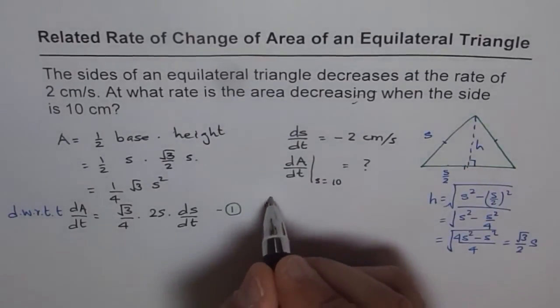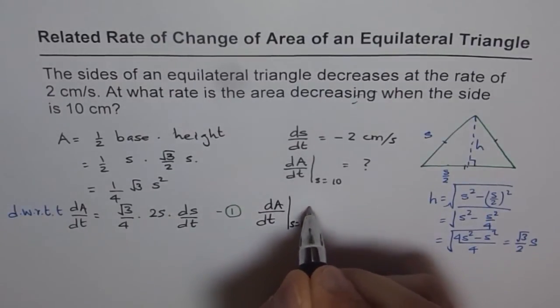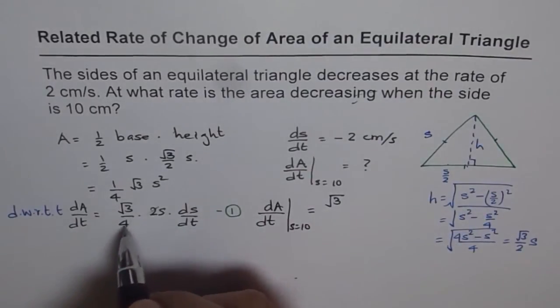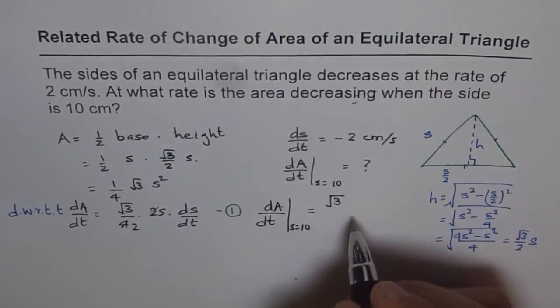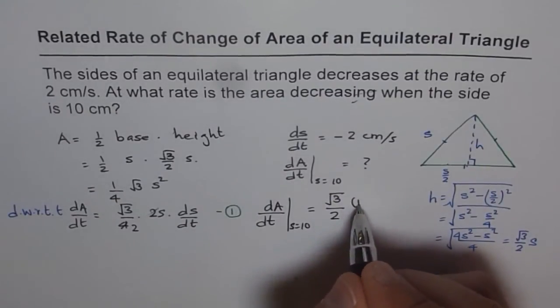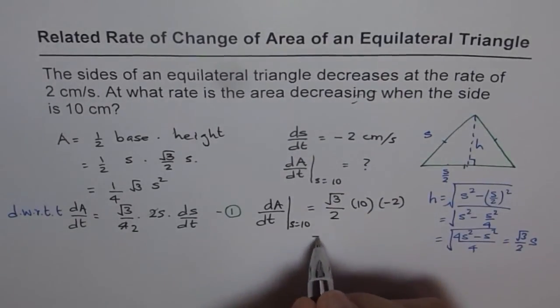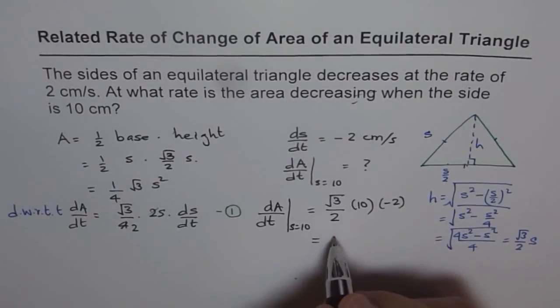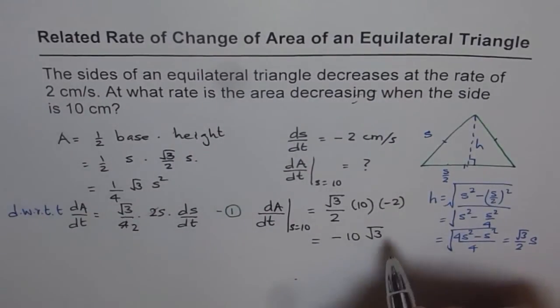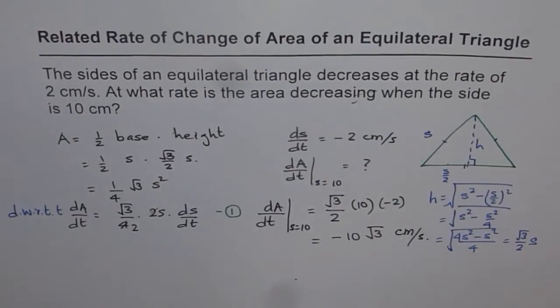So we have dA/dt, when S equals to 10, equals square root 3. So we can simplify this. We get 2 here, so (√3/2). S is 10 for us, so we'll write 10 here, and dS/dt is given to us as minus 2. So that gives us, 2 and 2 will cancel, we get minus 10 square root 3. And the units will be centimeters per second.